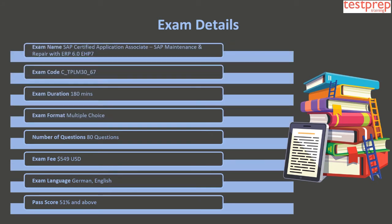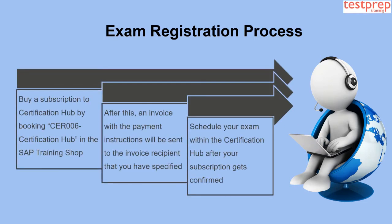Exam details: The exam name is SAP Certified Application Associate – SAP Maintenance and Repair with ERP 6.0 EHP 7. The exam code is C_TPLM30_67. Exam duration is 180 minutes. The format is multiple choice with 80 questions. The exam fee is $549, available in German and English, and the pass score is 51 percent and above.